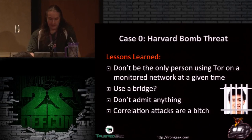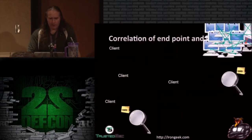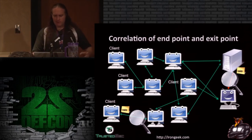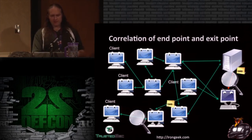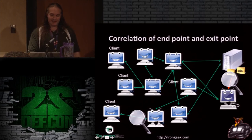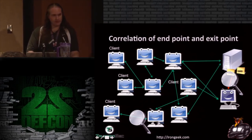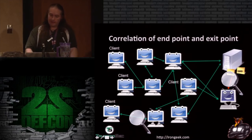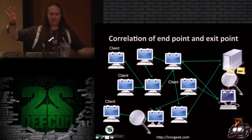A correlation attack: you watch traffic and see what's going on. Let's say everything is encrypted, but if you see a five-meg request go in and you watch both an entry node and an exit node — in what's known as a Sybil attack, someone controls both those nodes. They can sniff and say, 'I saw five megs come in this way, five megs go out this way, I saw an eight-meg response come back.' You can correlate both ends.